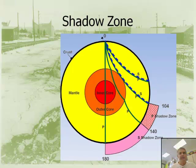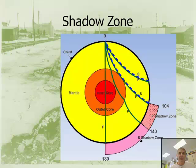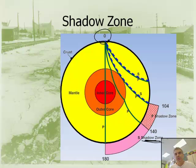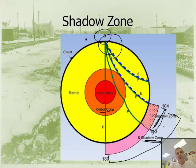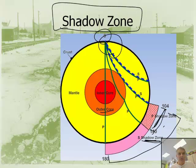One intriguing thing about earthquakes is that they tell us the structure of the earth. A concept called the shadow zone is important here. Your seismograph stations can't detect certain waves in specific regions. There's the P shadow zone, where you can't see P waves, and the S shadow zone covers a whole area where waves can't be detected because of the liquid outer core. The shadow zones are what told us what was at the center of the earth.